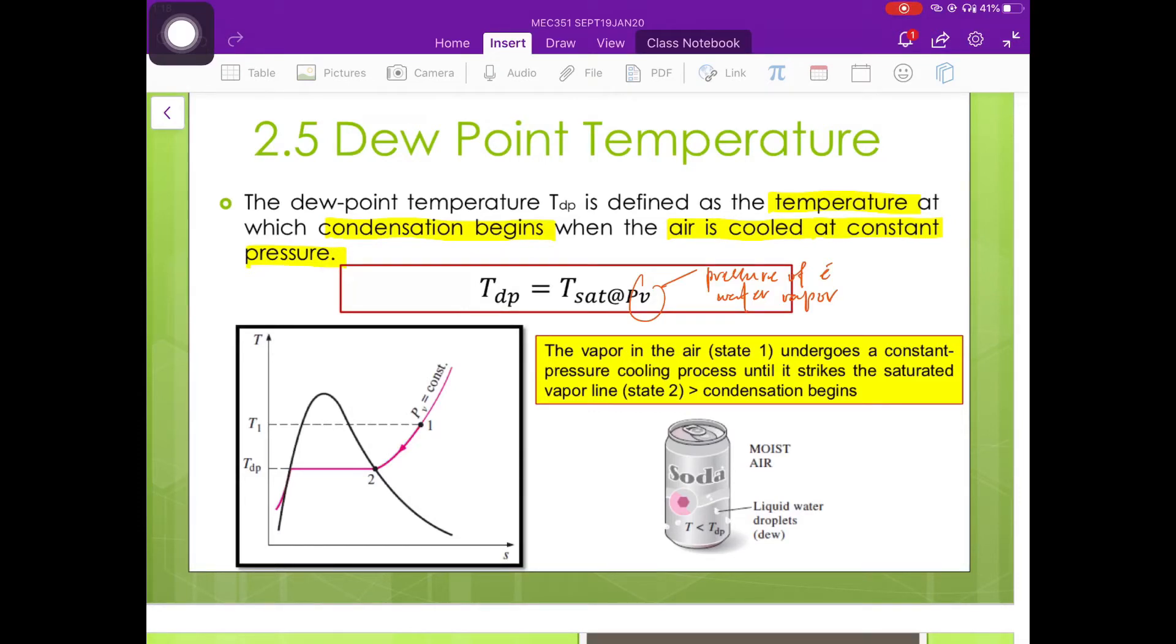The next property is dew point temperature. The symbol used to represent dew point temperature is Tdp.